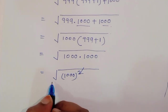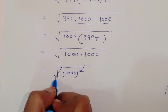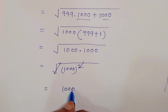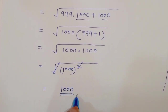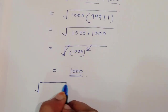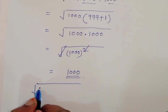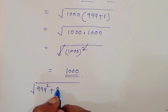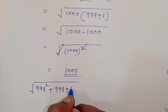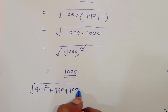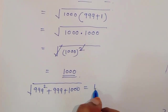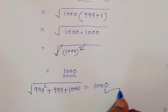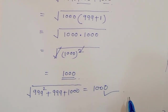We can write square of 1000, and the square is cancelled by the square root, so it equals 1000. Therefore, the square root of 999 squared plus 999 plus 1000 is equal to 1000. That is the solution. Thank you.